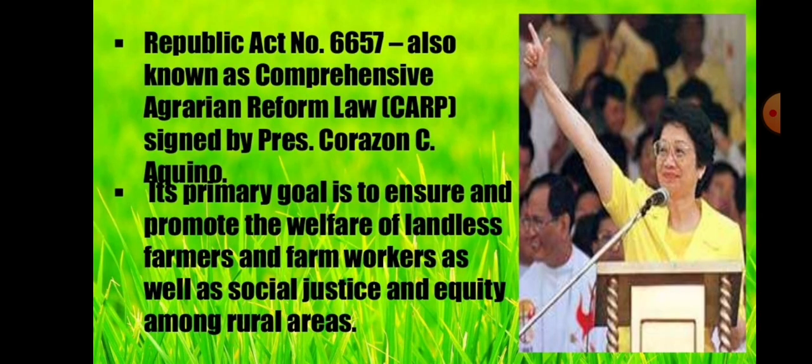Under Corazon Aquino, we have Republic Act No. 6657, also known as the Comprehensive Agrarian Reform Law, signed by President Corazon C. Aquino. Its primary goal is to ensure and promote the welfare of landless farmers and farm workers, as well as social justice and equity among rural areas. The goal of RA 6657 is to ensure that farmers — especially the landless who only rent land — are given their proper rights.